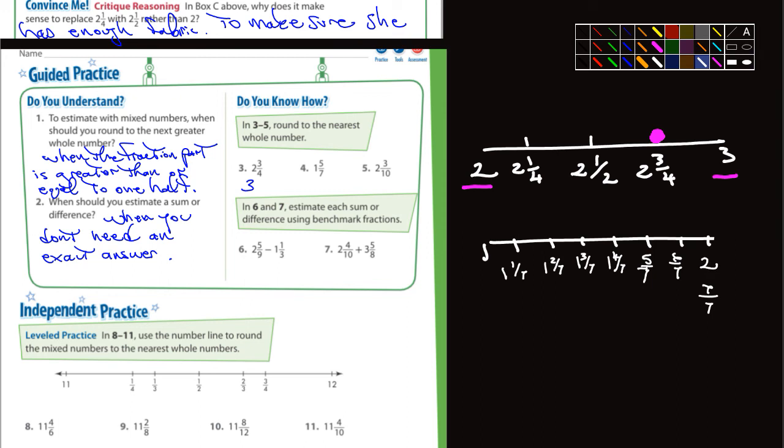So what's the question? Round to the nearest whole number. 1 5/7 would be right here. So is that closer to 2 or closer to 1? It's obviously closer to 2. So I was just showing you how you could use a number line if you needed to, to determine what whole number they're closest to.